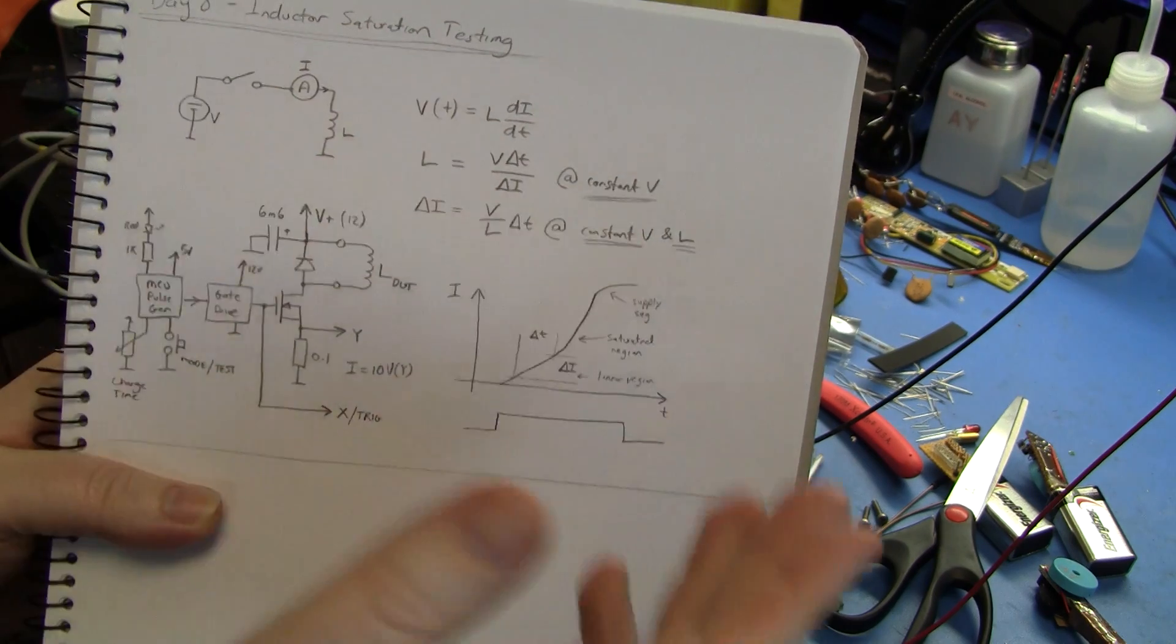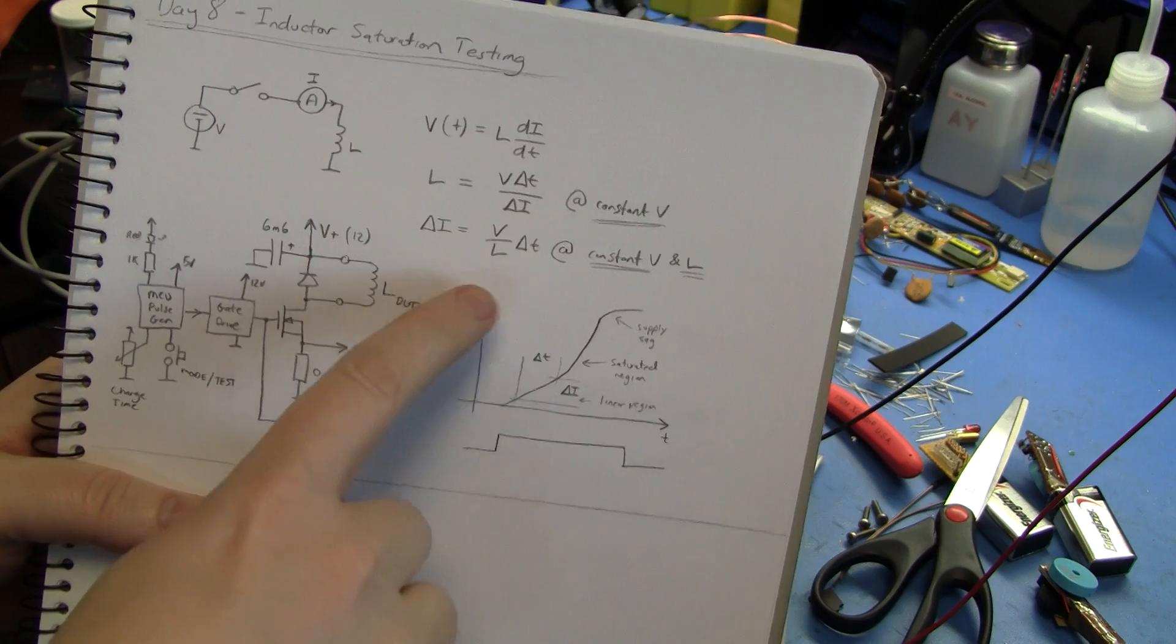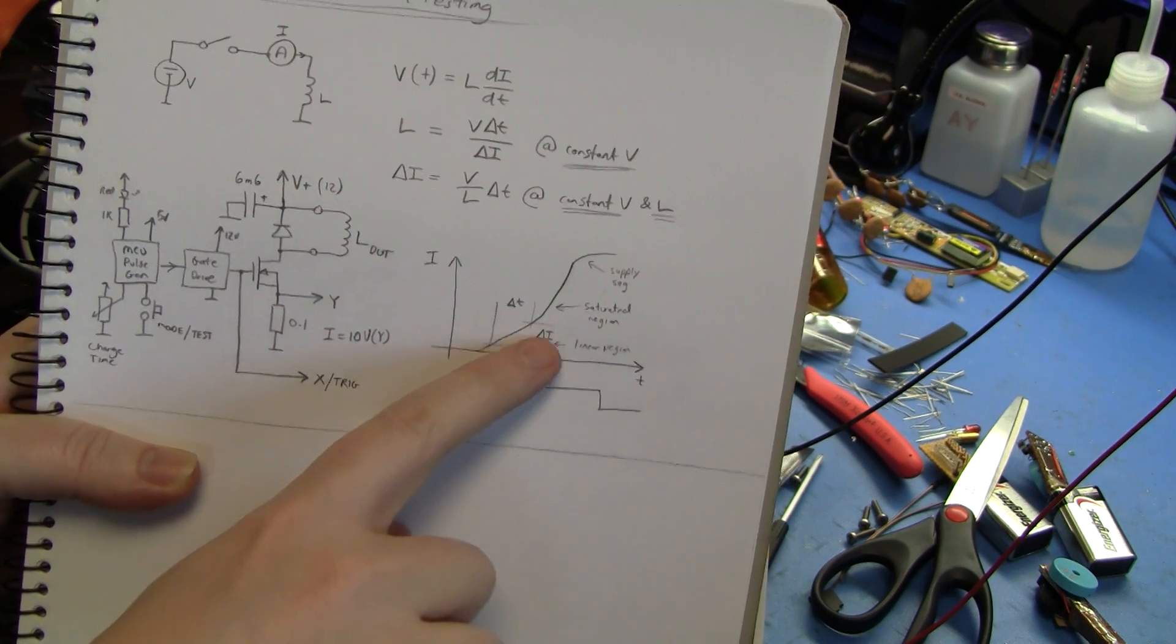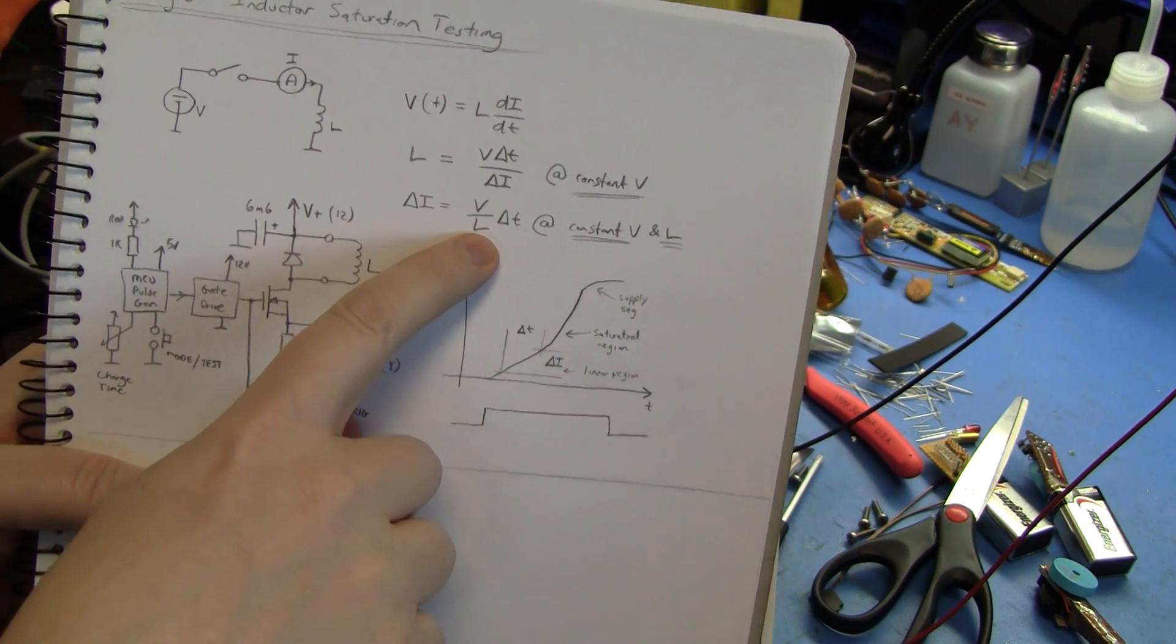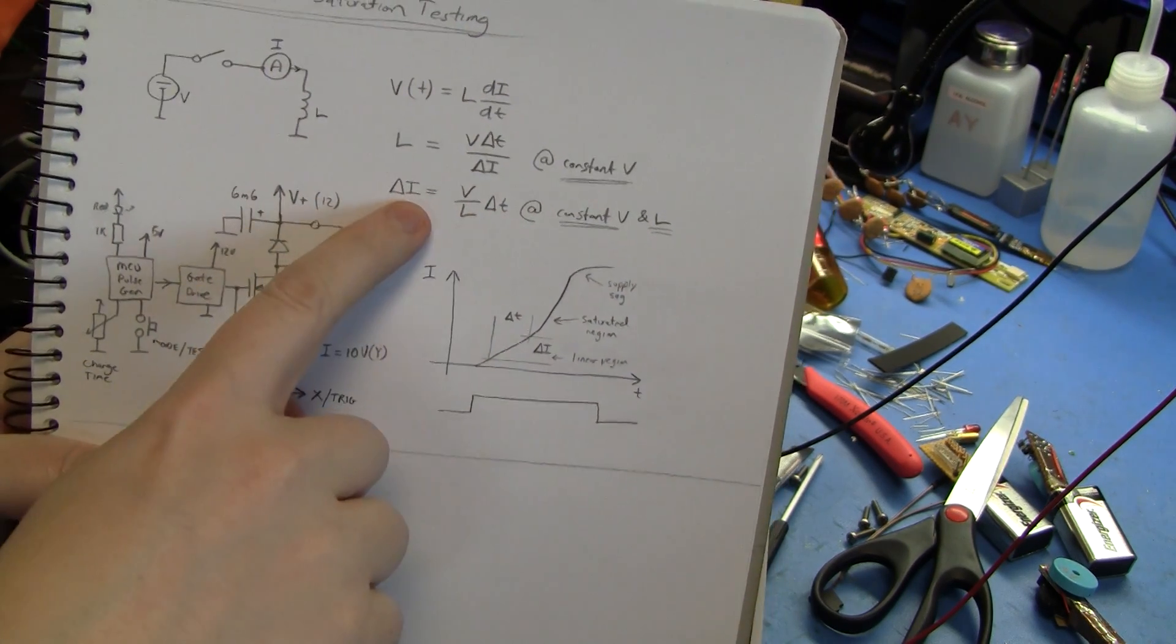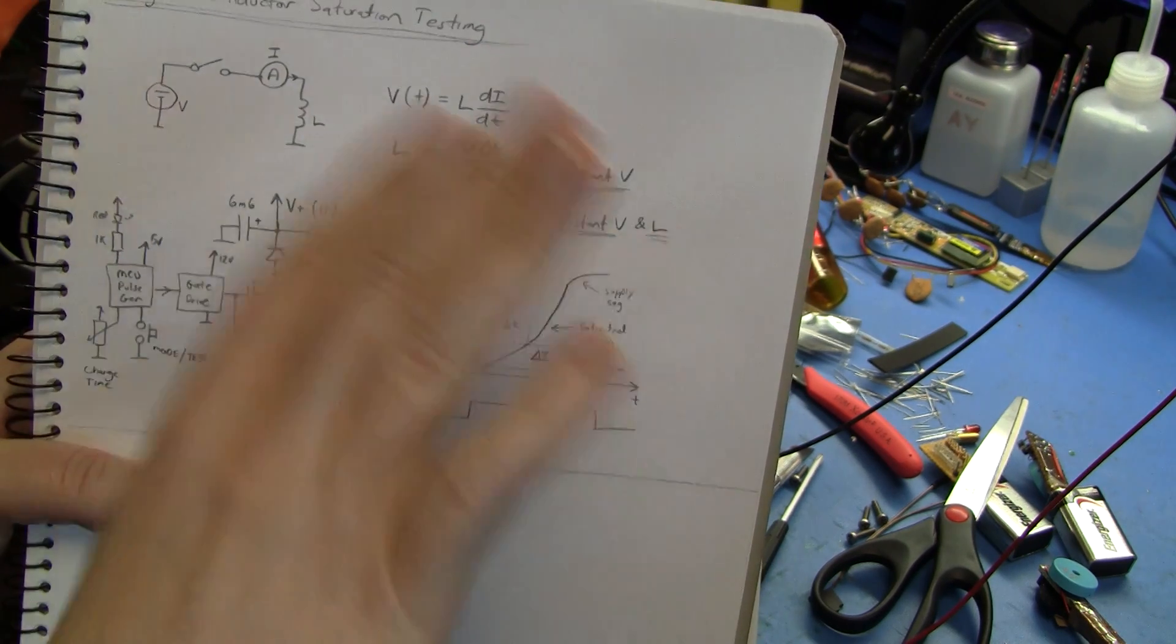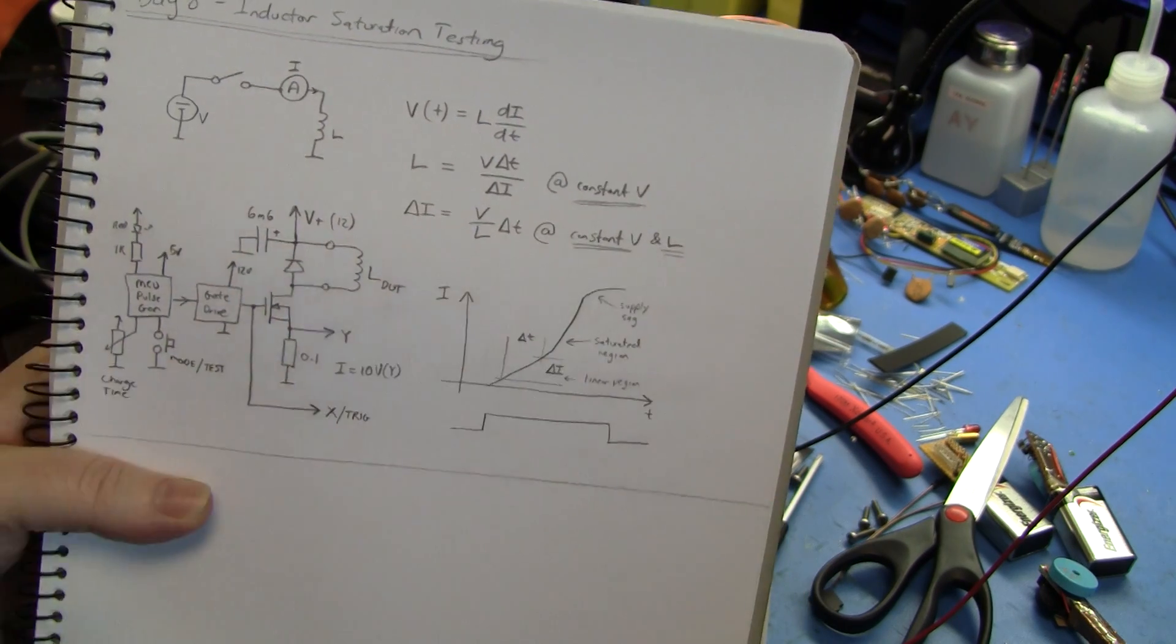That voltage has been applied across the inductor so you can think of this as y equals mx, the straight line. So here on our graph if we hold voltage constant and inductance doesn't change then with time the current will just ramp up or ramp down depending on whether the voltage is positive or negative. It's basically a linear relation.